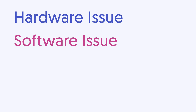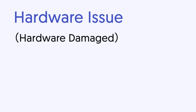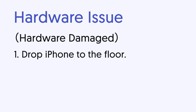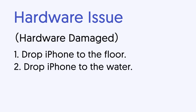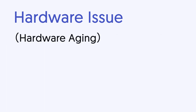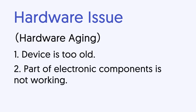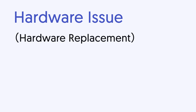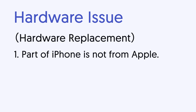Hardware issues are divided into the following situations. First, hardware is damaged — for example, you drop your iPhone on the floor, you drop your iPhone into the water, or your iPhone overheats. Second, hardware aging — your iPhone has been used for years and parts of the electronic components are no longer able to work. Third, hardware replacement — if parts of your iPhone's electronic components are not from Apple brand, it might cause many issues.